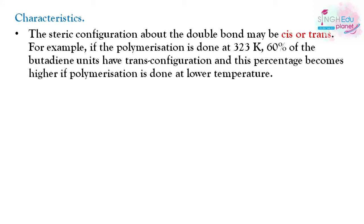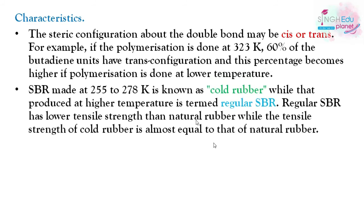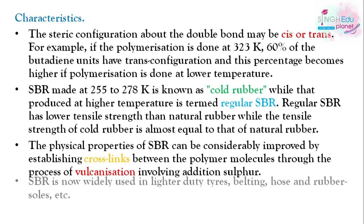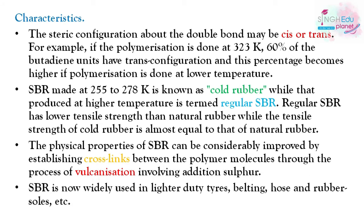Regarding characteristics: the steric configuration about the double bond may be cis or trans. If polymerization is carried out at 323 Kelvin, about 60 percent of the product will have trans configuration. If SBR is prepared at 255 to 273 Kelvin, it is called cold rubber and has tensile strength nearly equal to natural rubber. Regular SBR has lower tensile strength, but physical properties are considerably improved by cross-linking through vulcanization. SBR is used in lighter-duty tires, belting, hoses, and rubber soles.